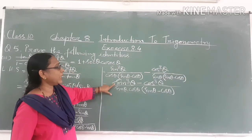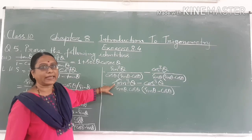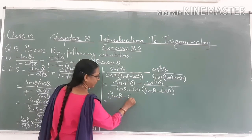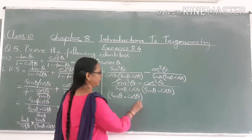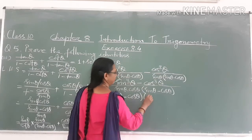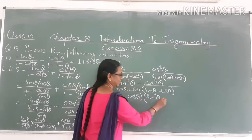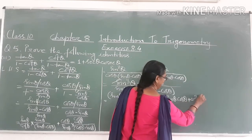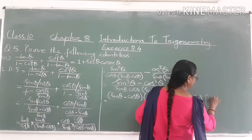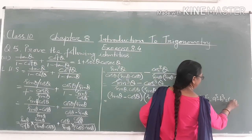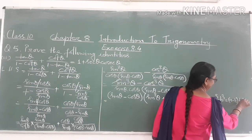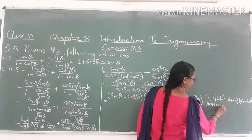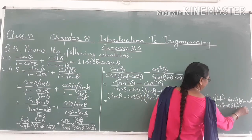Now we have to apply the a³ minus b³ formula. A cube minus b cube equals a minus b. Here a equals sin θ and b equals cos θ. The second bracket is sin² θ plus sin θ into cos θ plus cos² θ. The formula is a³ minus b³ equal to a minus b, within bracket, a² plus ab plus b².